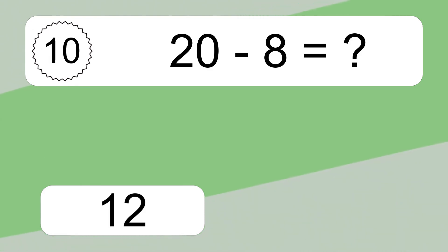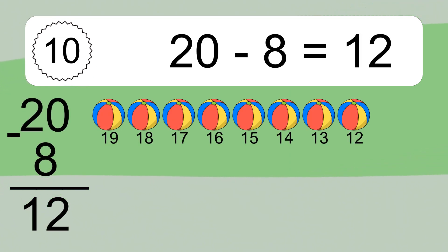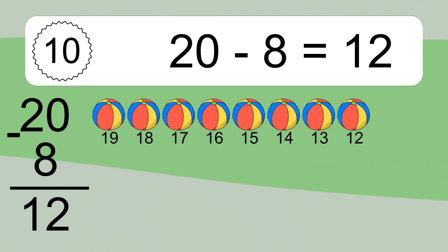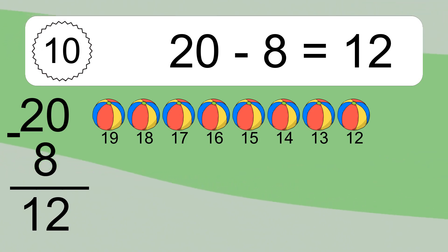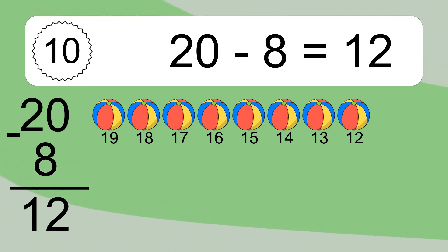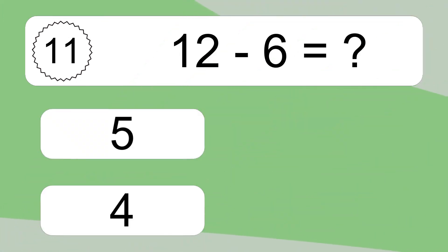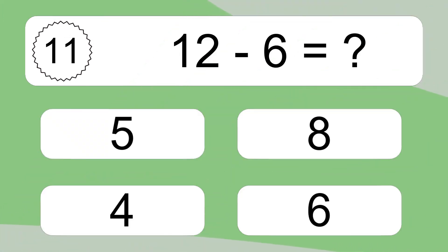20 minus 8 equals what? 20 minus 8 equals 12. Let's count it: 19, 18, 17, 16, 15, 14, 13, 12.